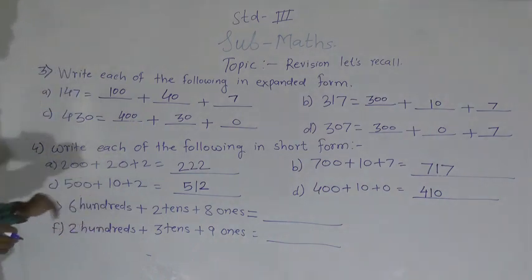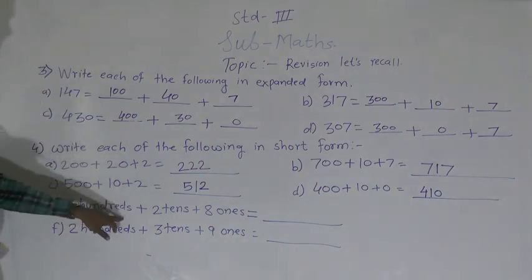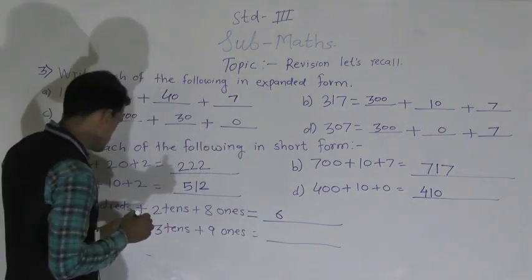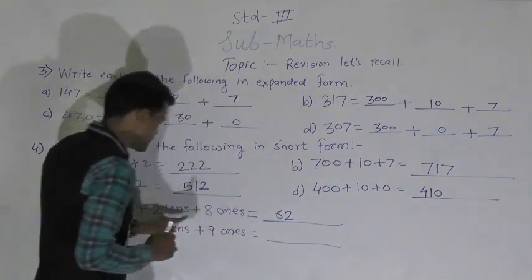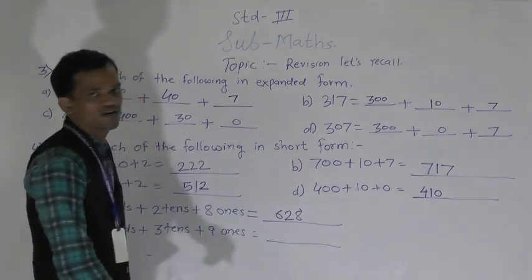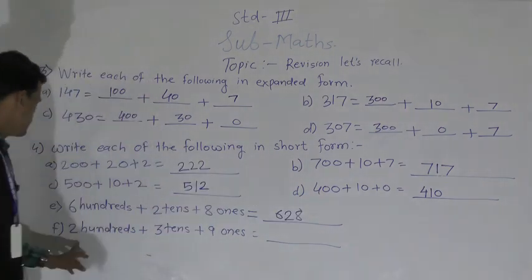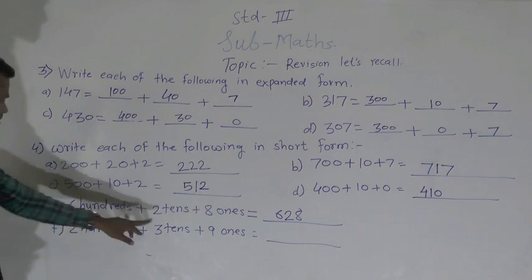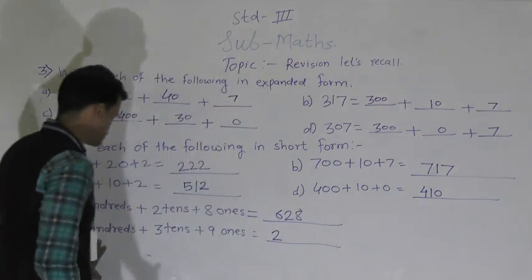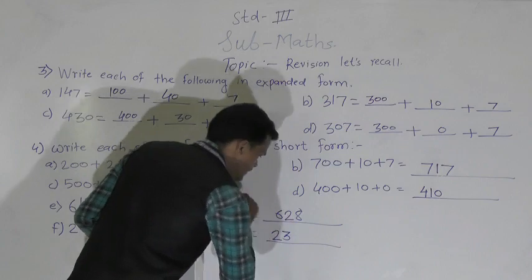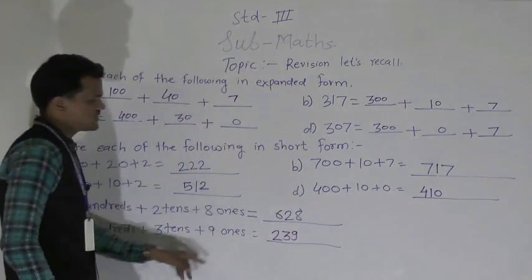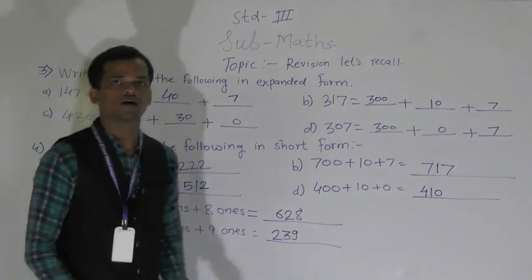Then: 600, only 600 is given. Write 6 at the hundreds place. Then 2 tens means write 2 at the tens place, and 8 ones means write 8 at the ones place. So 628 is formed. Then: 200 + 3 tens + 9 ones. Write 2 at hundreds, 3 at tens, 9 at ones. So 239 is formed.